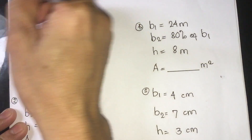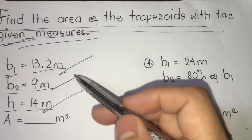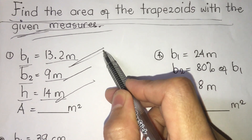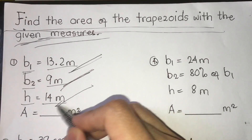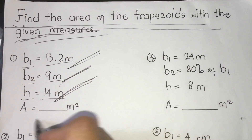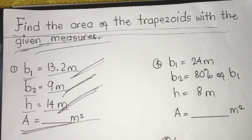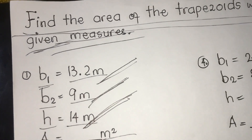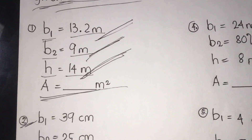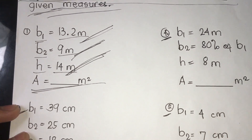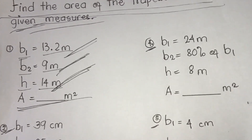The direction says: find the area of trapezoids with the given measures. Number one: b1 is 13.2 meters, b2 is 9 meters, and height is 4 meters. The question is to find the area in meters squared. We're going to solve problems number one through number five.